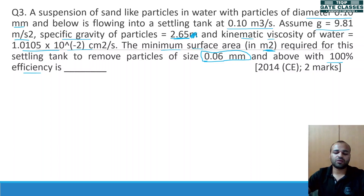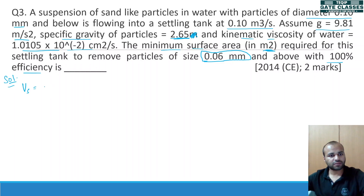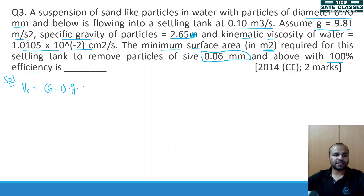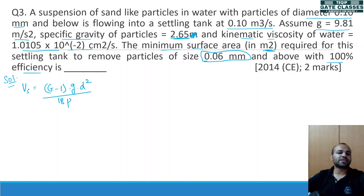Let us solve it by putting in the various values. I am writing the expression for settling velocity in a slightly different form: Vs = (G−1) × g × d² / (18ν), where instead of unit weight of water, I have used gravitational constant g in the numerator and kinematic viscosity ν directly in the denominator. With this form, we do not need to convert kinematic viscosity into dynamic viscosity.